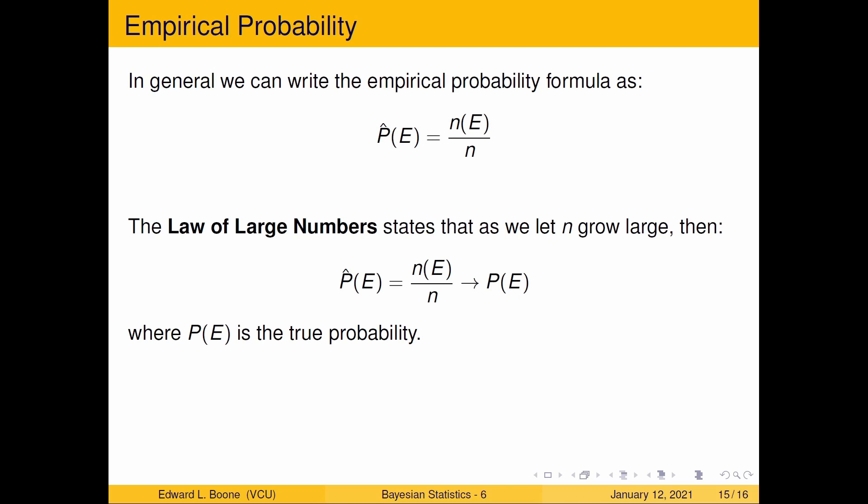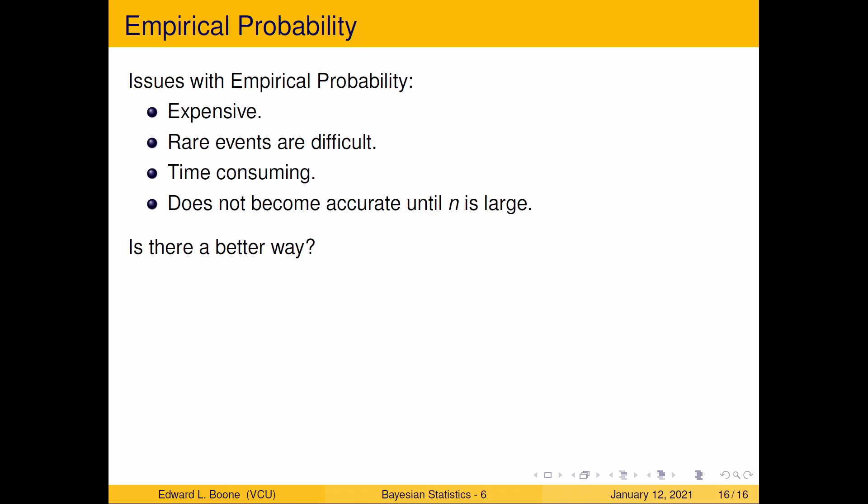So what is the law of large numbers? Well, it states that as we let n grow large, the number of times we look, then the probability of our event that we estimate using our little formula there is going to approach the true probability in the population. We can estimate the true probability so long as we have enough information where n is the number of times we looked or the number of pieces of information we have.